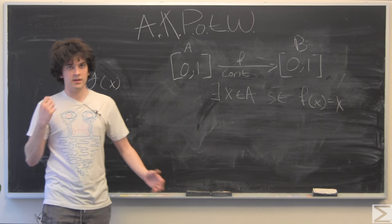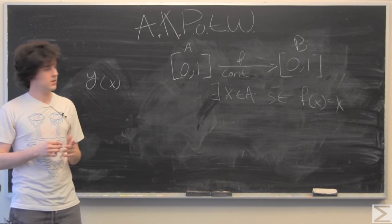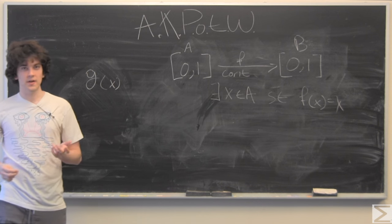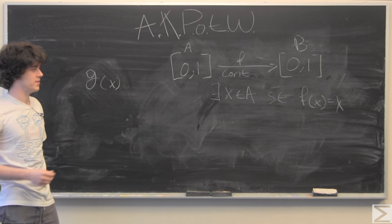So we're going to find a new function, be a little clever. So call that function g of x and set that equal to f of x minus x.